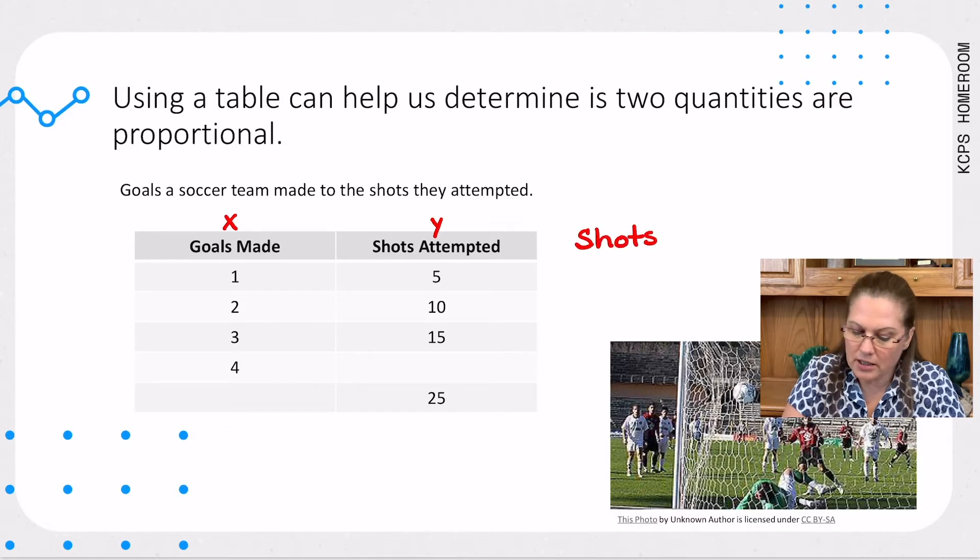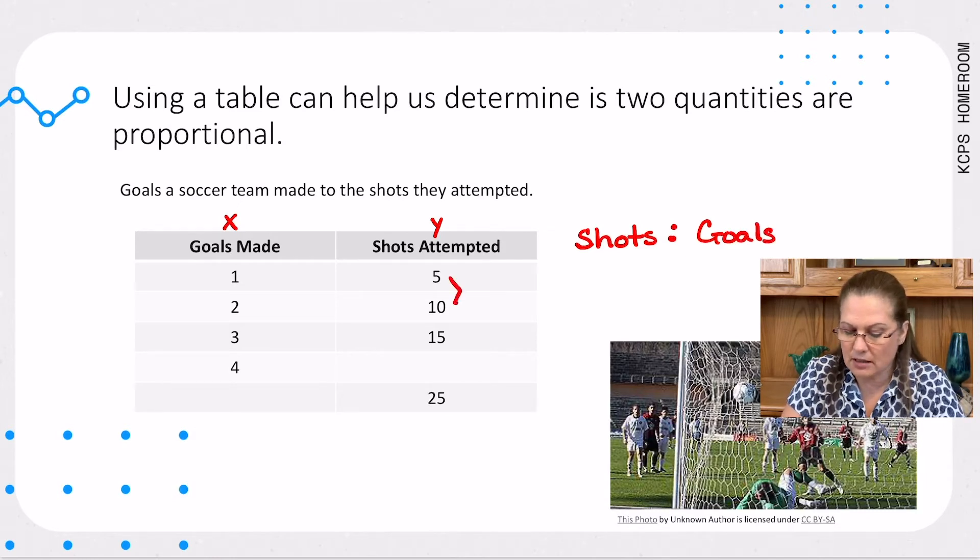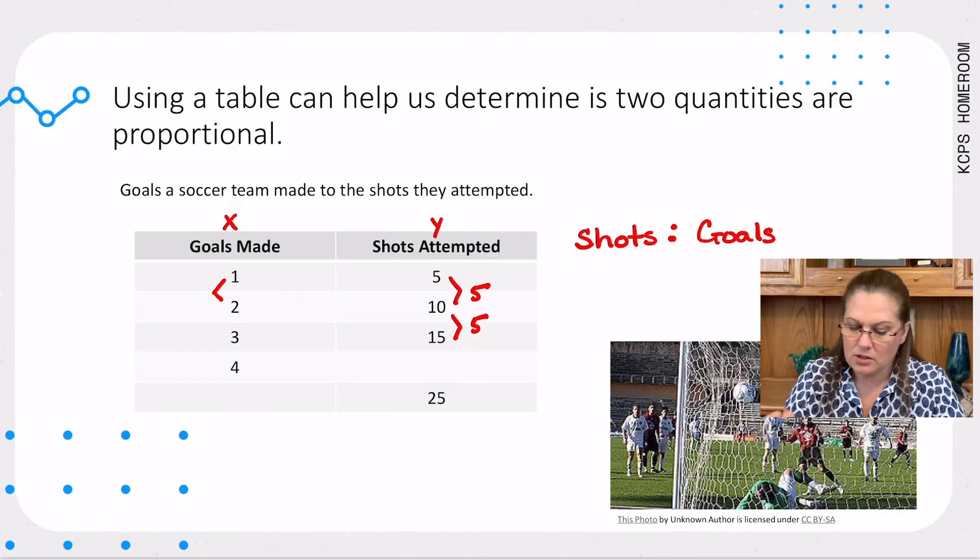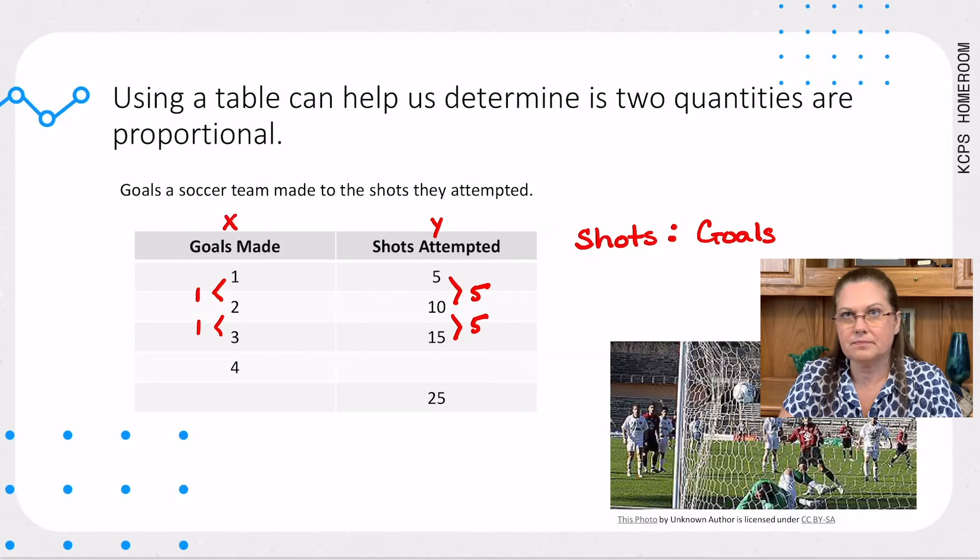Our change in y from 5 to 10, that's a change of 5. 10 to 15, that's also a change of 5. On the goals, 1 to 2, that's a change of 1. From 2 to 3, that's a change of 1. So, I'm pretty confident with our first three rows that our constant ratio is going to be 5 to 1. For every five attempts, we make one goal.